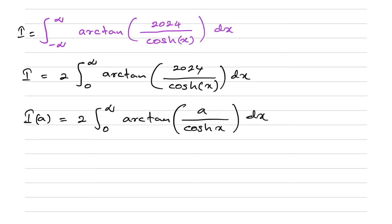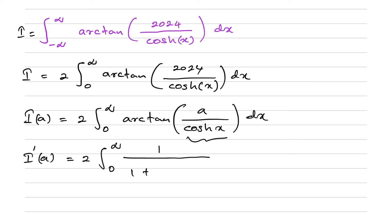In the Feynman technique, we differentiate with respect to a. So I'(a) is equal to two times the integral from zero to infinity of the derivative of arctan, which gives 1 over (1 + a²/cosh²(x)), times the derivative of (a / cosh(x)) with respect to a, dx.